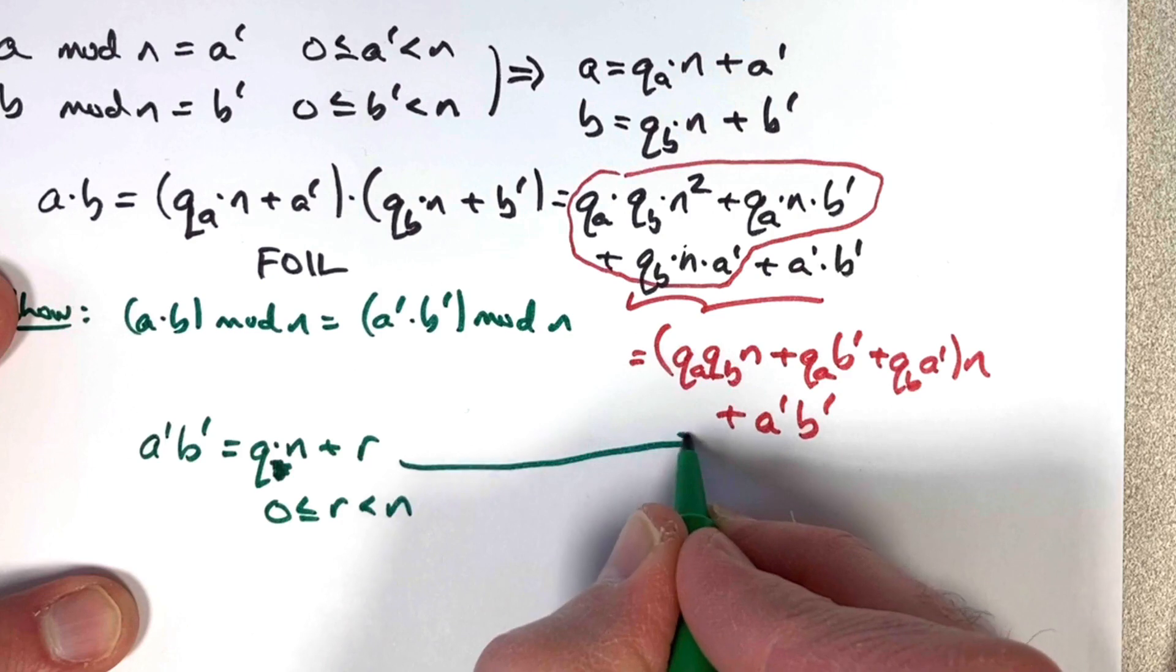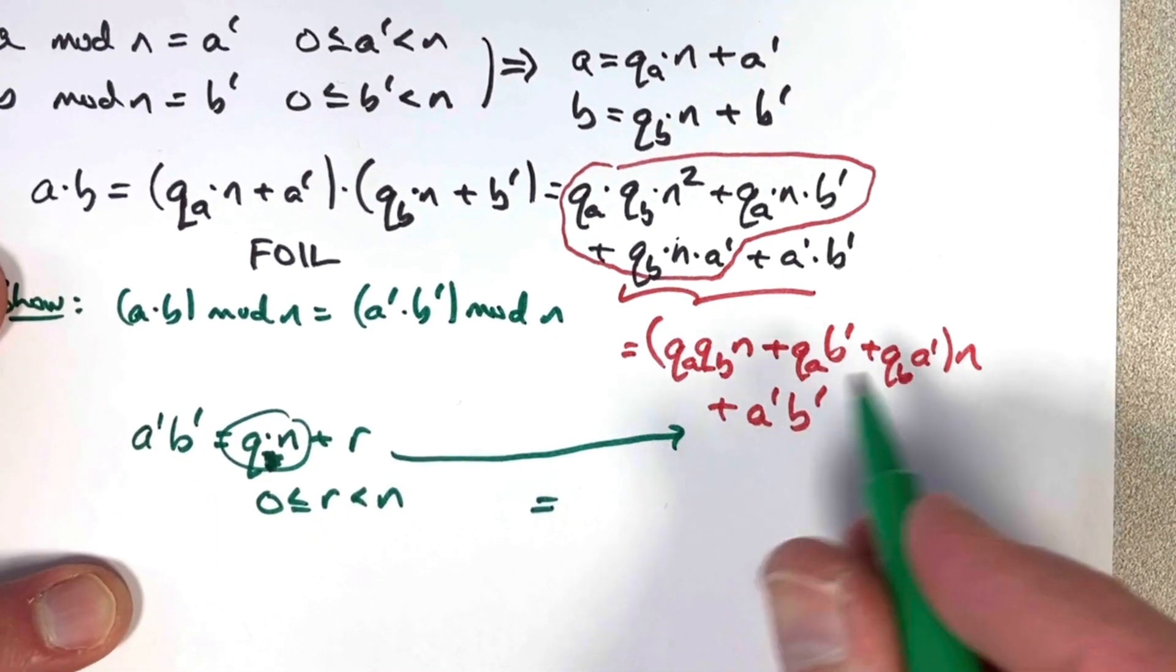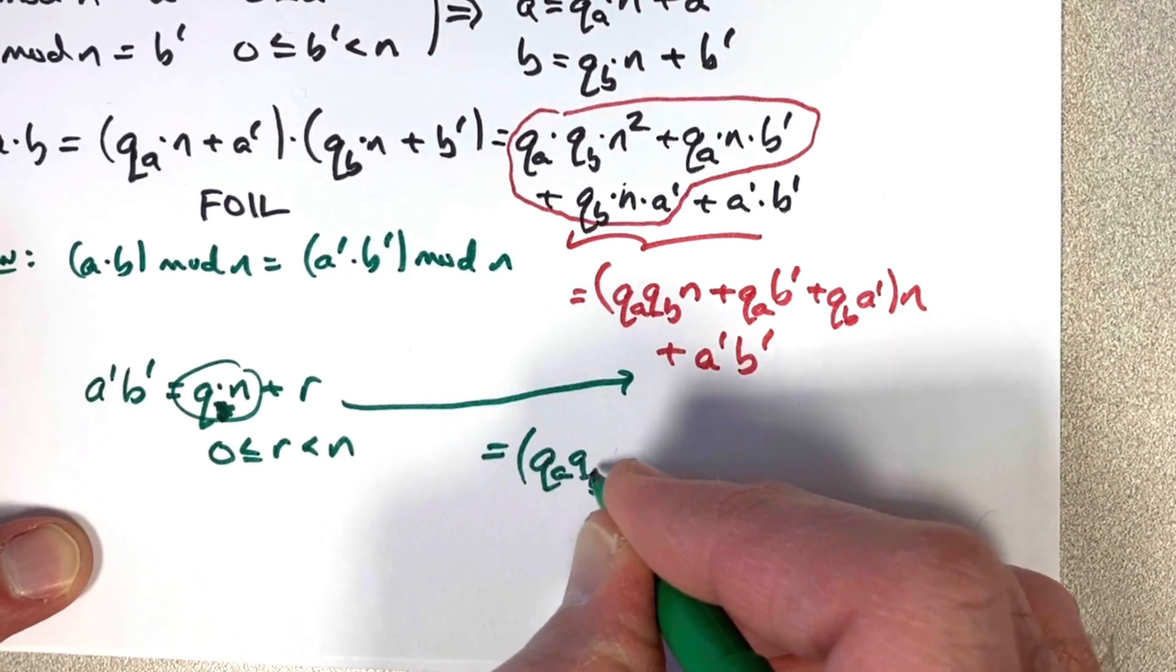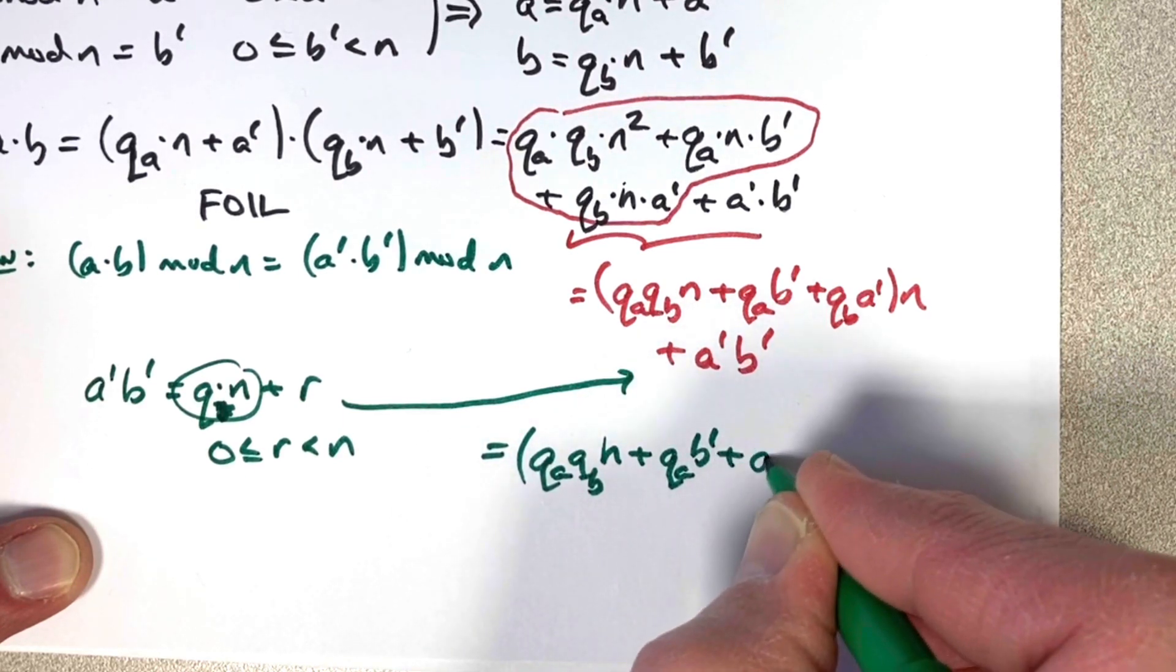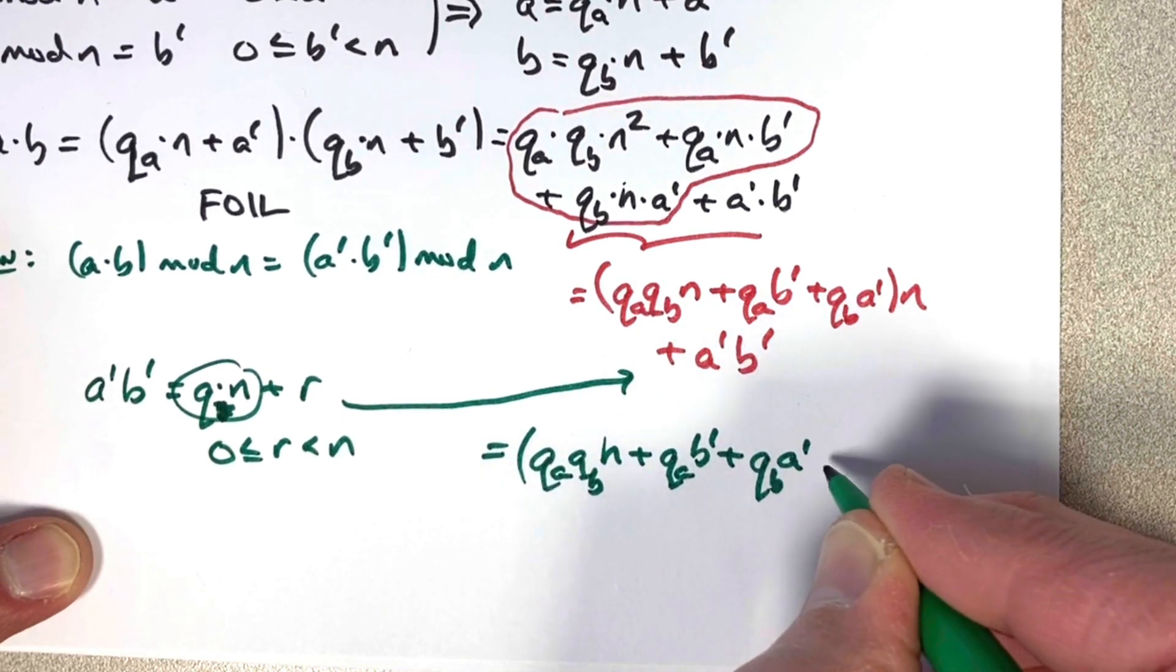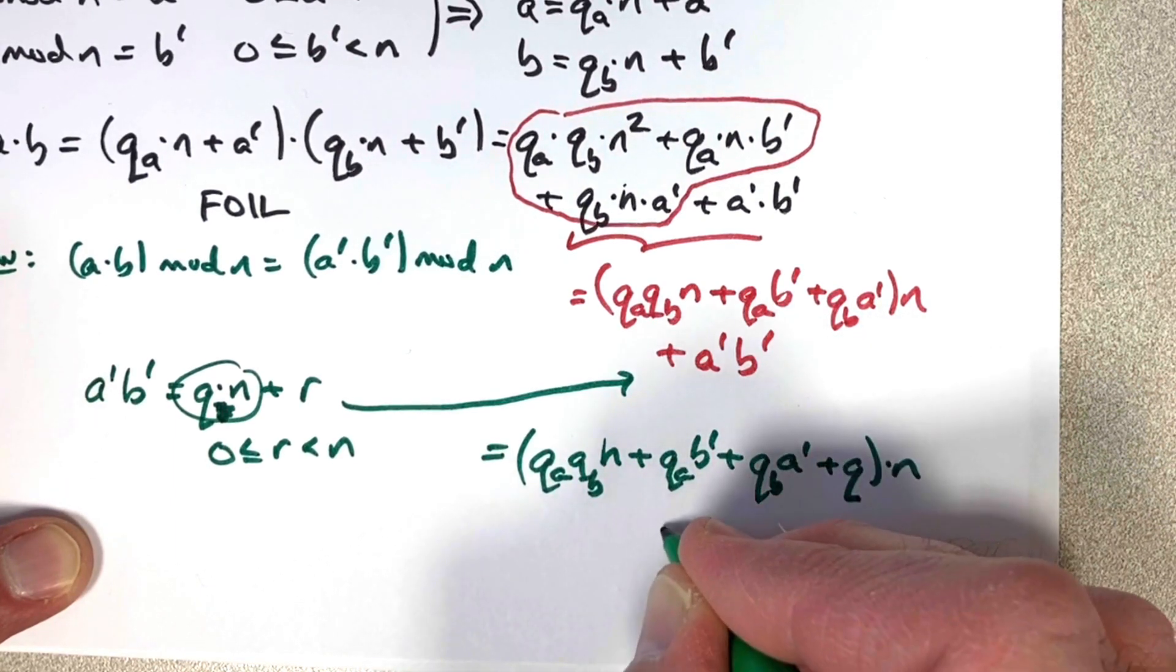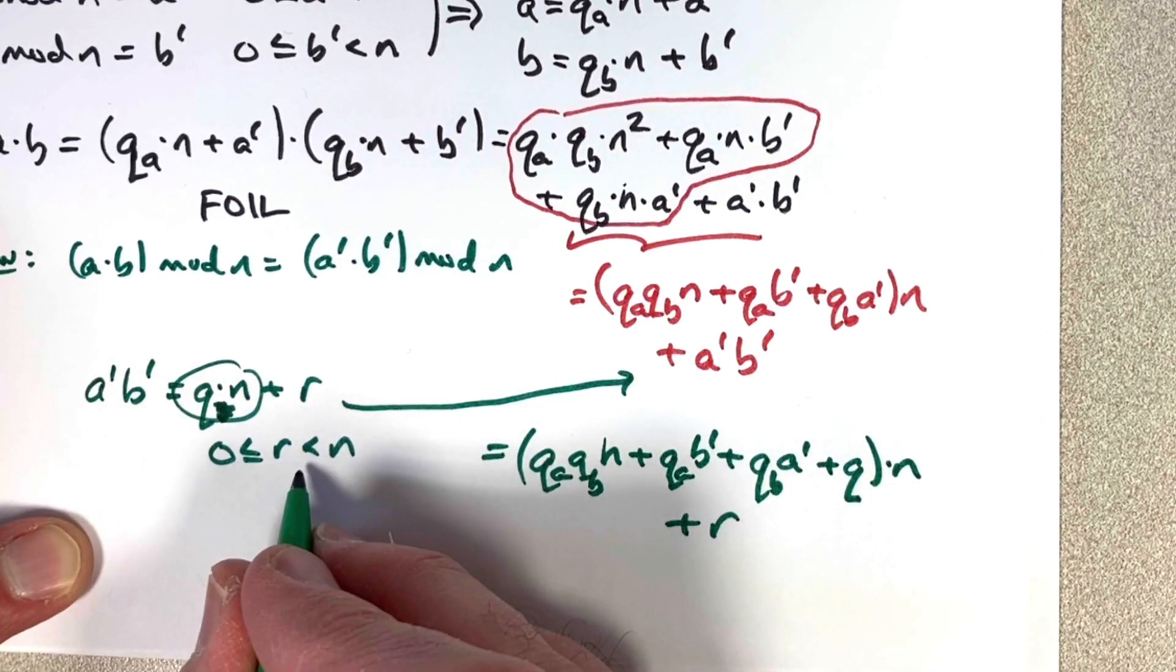And now I can just go ahead and substitute over here. I can group this part together with the other part. I can write q a q b n plus q a b prime plus q b a prime plus q times n and then plus r.